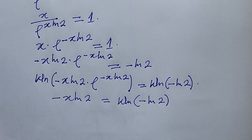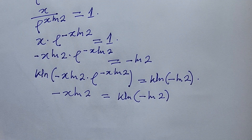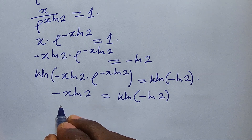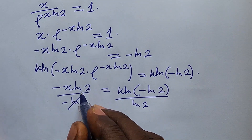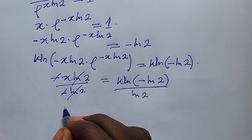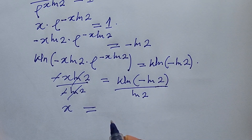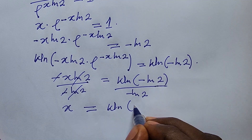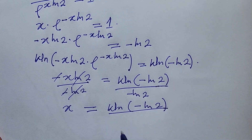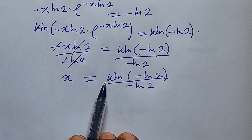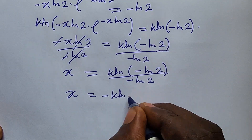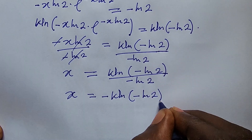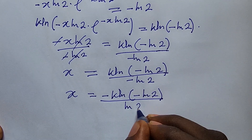We are looking for x, so we divide both sides by minus ln(2). This gives us x equal to W_n(minus ln(2)) over minus ln(2), and bringing the minus sign across, x equals minus W_n(minus ln(2)) over ln(2).